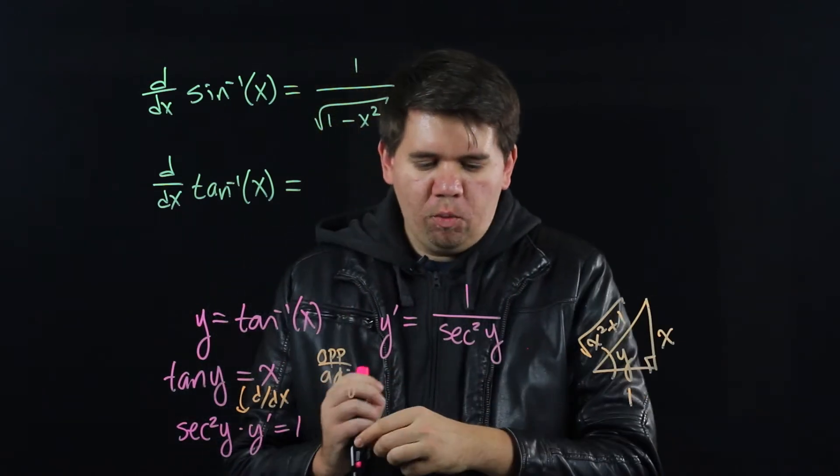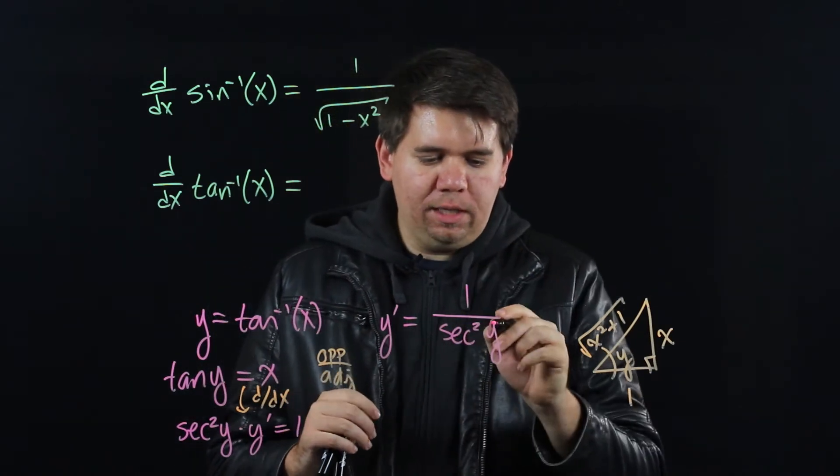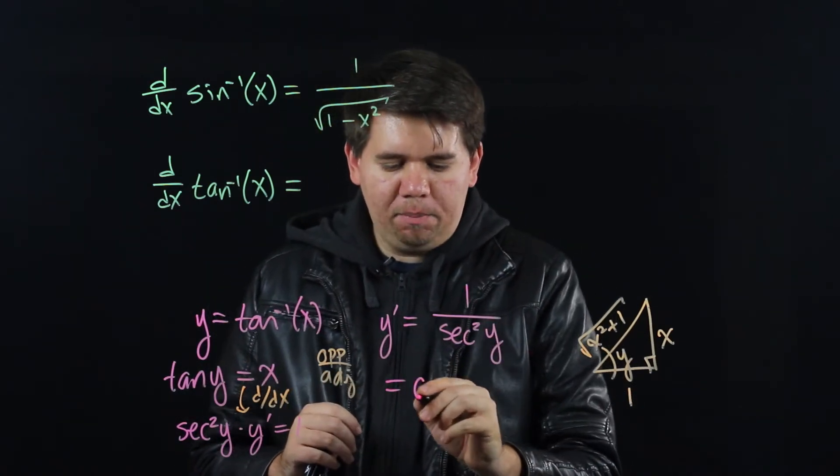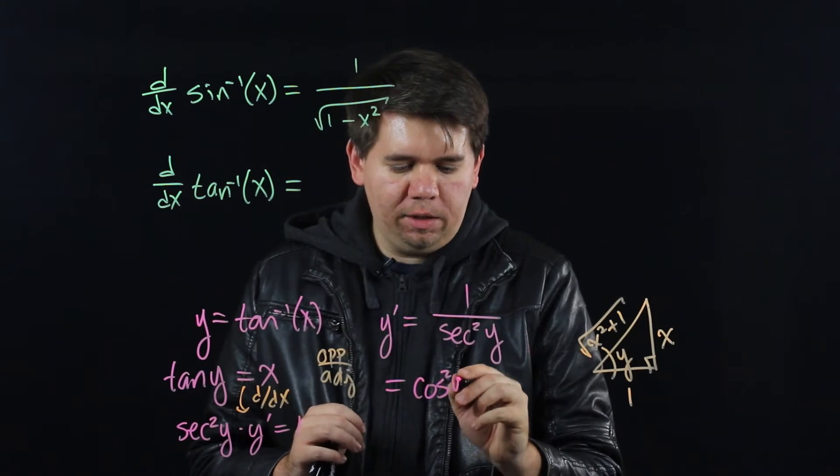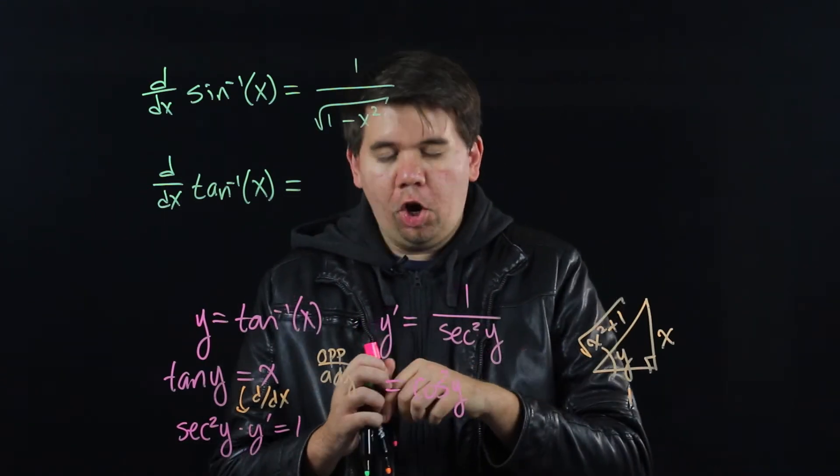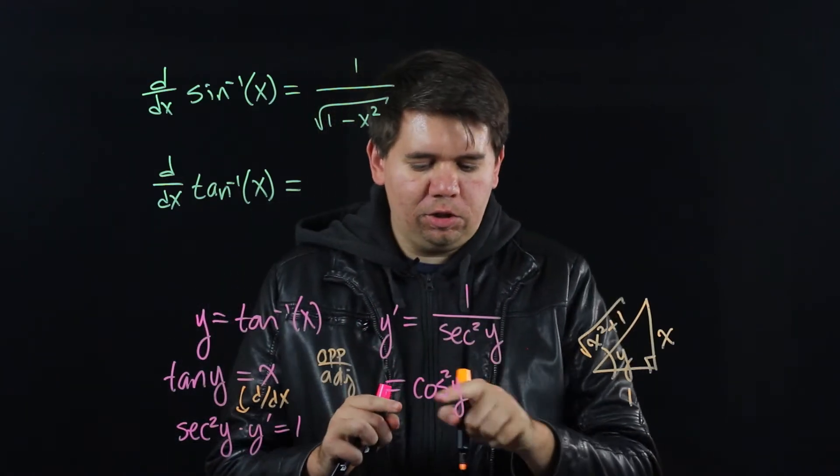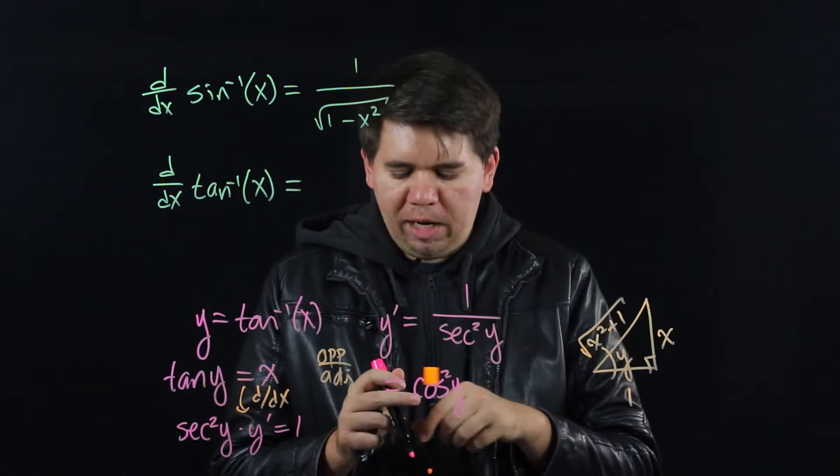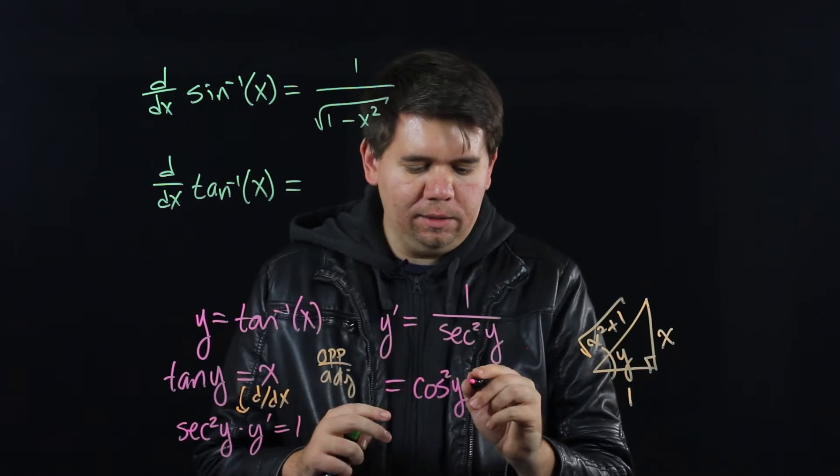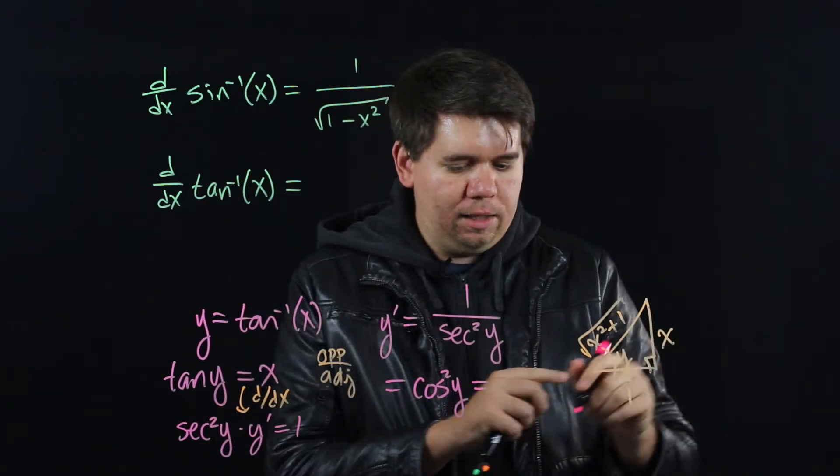y prime is 1 over secant squared of y. That's the same thing as cosine squared of y. But cosine is just adjacent over hypotenuse. So this should just come out to be whatever my adjacent side is. Adjacent side is 1.